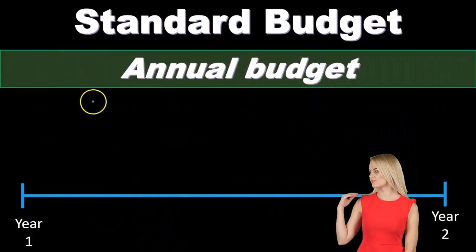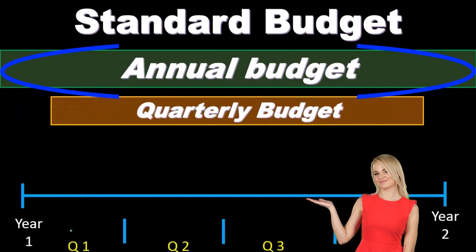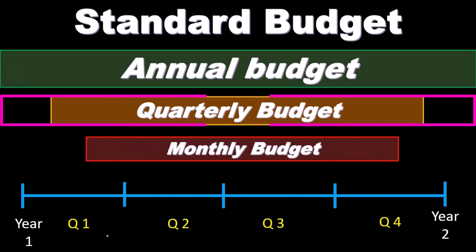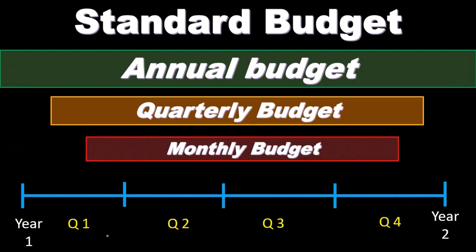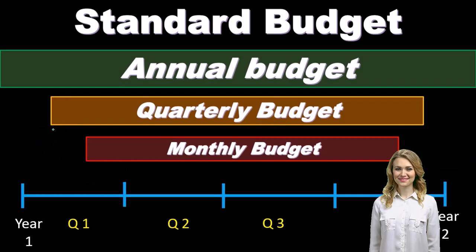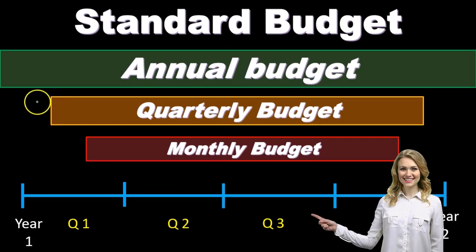We can envision it this way: we have the annual budget as the overarching budget, within which we have the quarterly budgets, and then the monthly budgets. As we go through the year, every month we compare actual to the monthly budget, every quarter we compare actual to the quarterly budget, and of course we do the same for the annual budget as well.